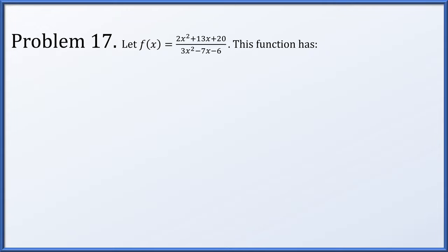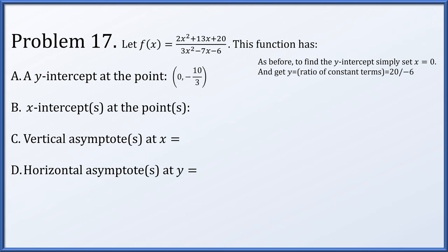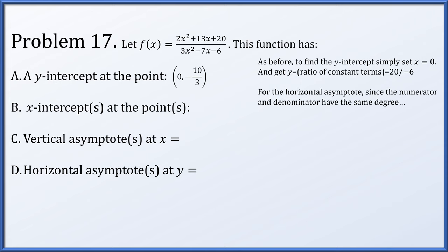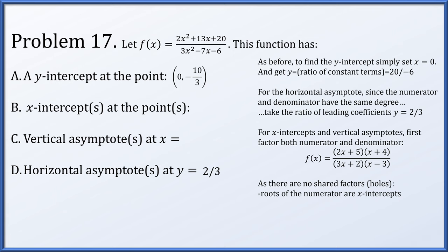In problem 17, f of x equals 2x squared plus 13x plus 20 over 3x squared minus 7x minus 6. The y-intercept: x equals 0 gives 20 over negative 6, simplifying to negative 10 thirds, so the point is 0, negative 10 thirds. The horizontal asymptote: equal degree, ratio of leading coefficients gives y equals 2 thirds. Factoring: f of x equals 2x plus 5 times x plus 4 over 3x plus 2 times x minus 3. No shared factors, so no holes. X-intercepts are at negative 5 halves and negative 4; vertical asymptotes are at negative 2 thirds and 3.